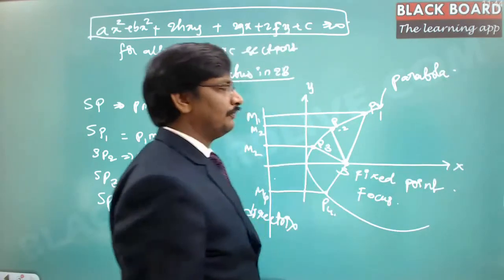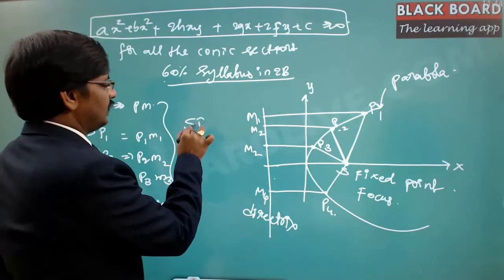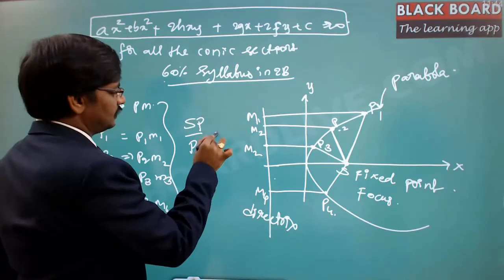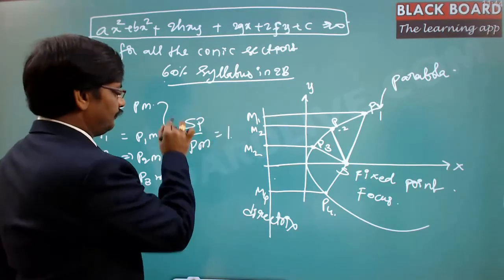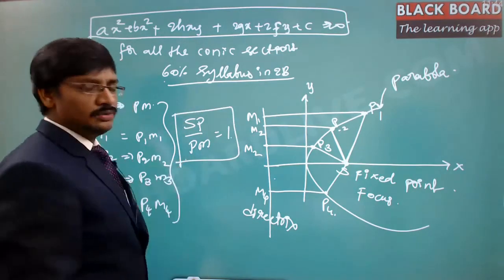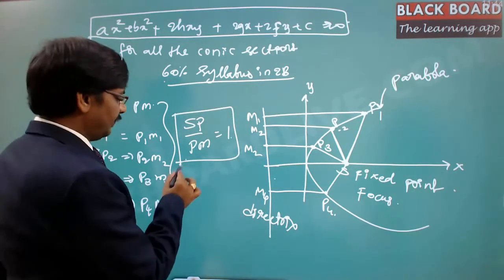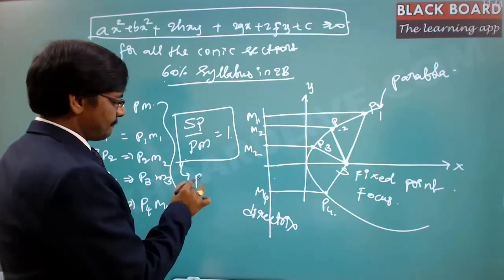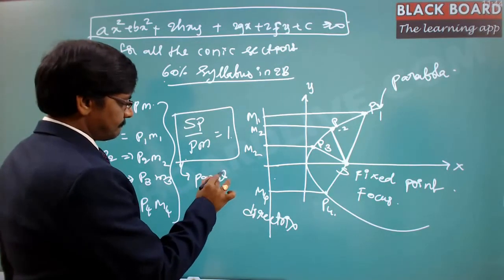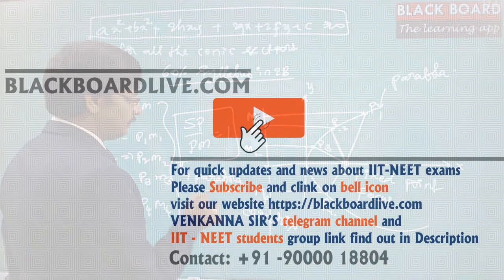This rule, in general, is SP / PM = 1. This rule states that the shape is going to be a parabola.